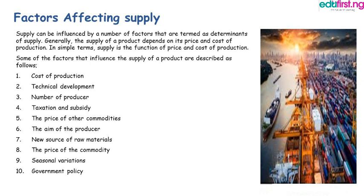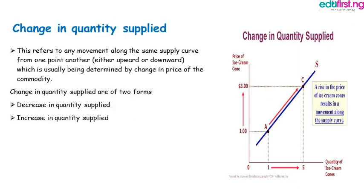Now let's look at the factors affecting supply. Supply can be influenced by a number of factors termed as determinants of supply. Generally, supply depends on price and cost of production. Some factors that influence the supply of a product are: (1) cost of production, (2) technical development, (3) number of producers, (4) taxation and subsidy, (5) price of other commodities, (6) aim of the producer, (7) source of raw materials.